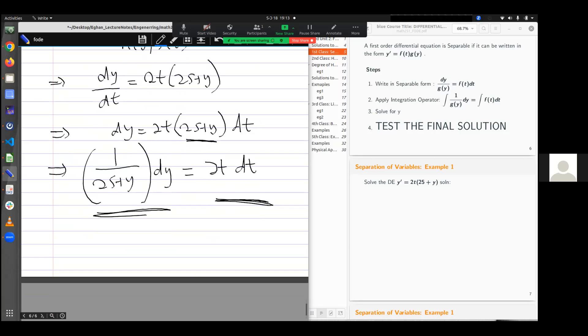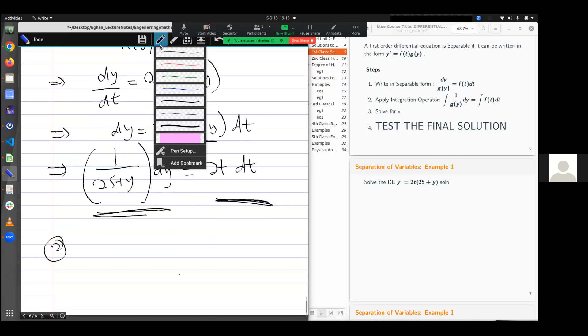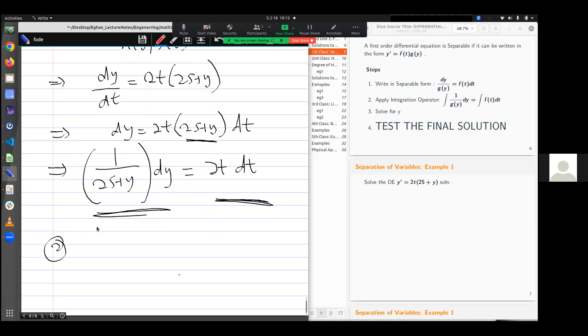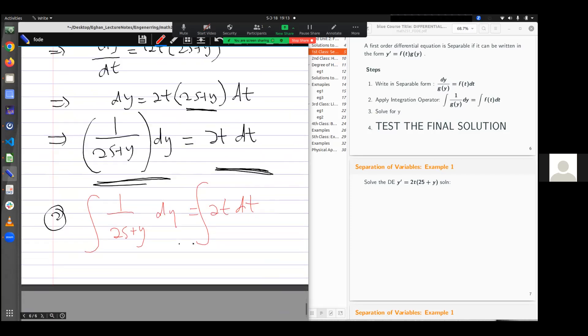And that is a separable form. Now the second step is to integrate. So I integrate 1/(25 + y) dy is equal to integral 2t dt. If I integrate 1/x dx, I'm supposed to get ln x.